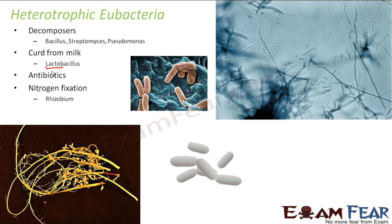Symbiosis is a kind of association where both organisms are mutually benefited. Here in this picture you can see the legumes and the roots of the legumes where these bacteria are present. One example is Rhizobium — a heterotrophic bacteria which helps in fixing nitrogen to the soil. It is present in the root nodules of legume plants like peas and soya bean. These bacteria produce nitrogen compounds that help the plant to grow, and in return the bacteria obtain their nutrition from the plant. Both are benefited — this is an example of symbiosis.